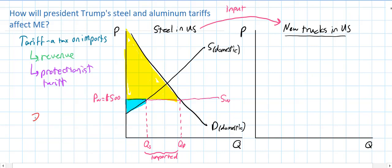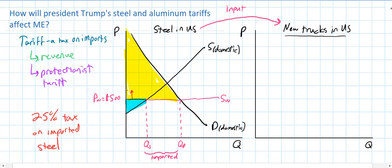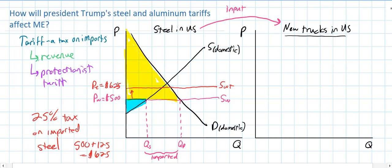So what is President Trump proposing? He's proposing a 25% tax on all imported steel. How would that affect the price of steel here in the United States? It would raise the price by $125, because 25% of $500 is $125. So we'd see the world supply decrease — graphically that looks like an upward shift — which I'll call SWT for supply with tariff. The new price PT equals $500 plus $125, giving us a new price of steel in the United States of $625.